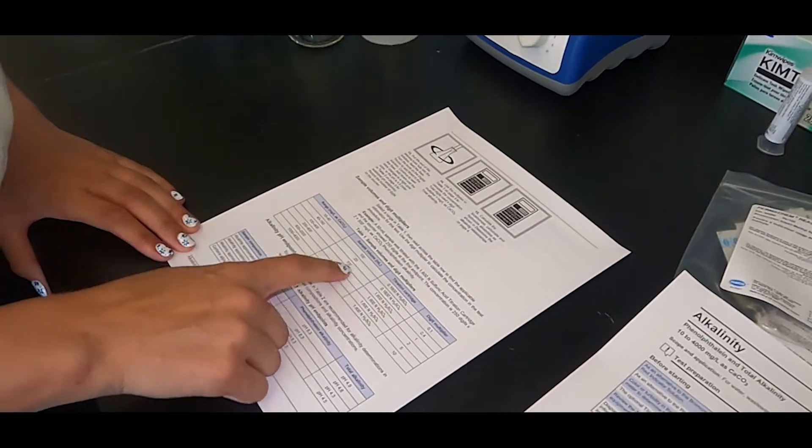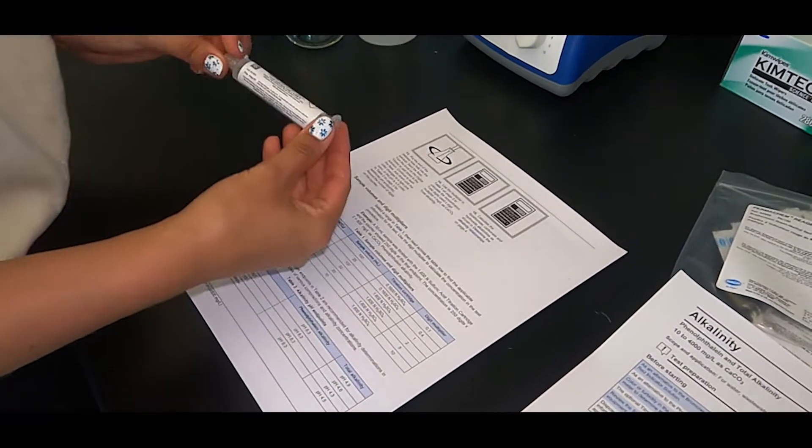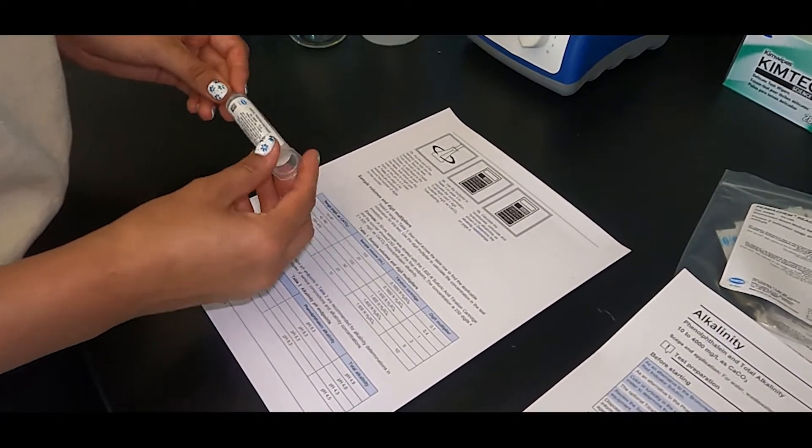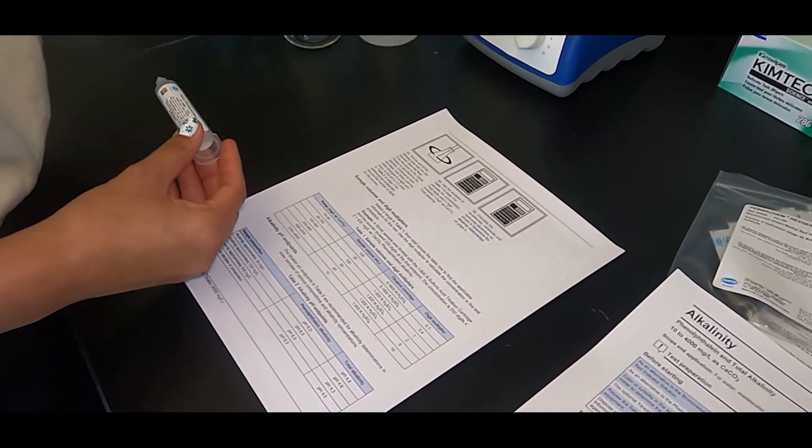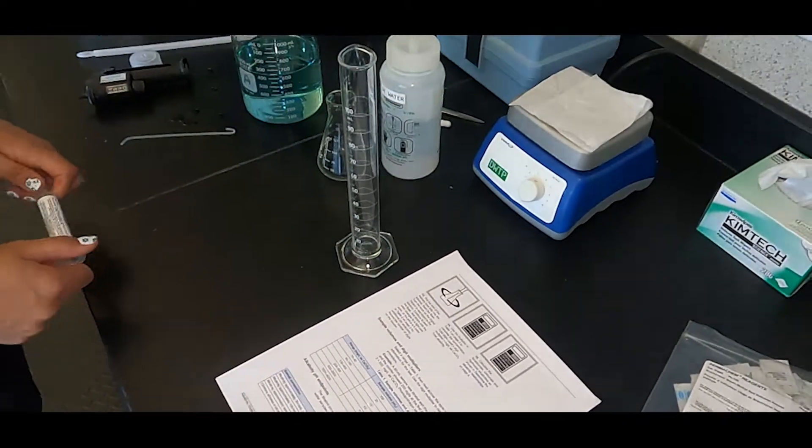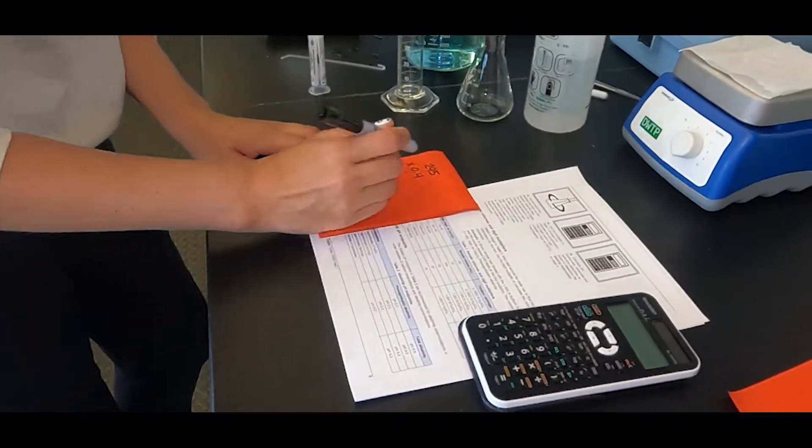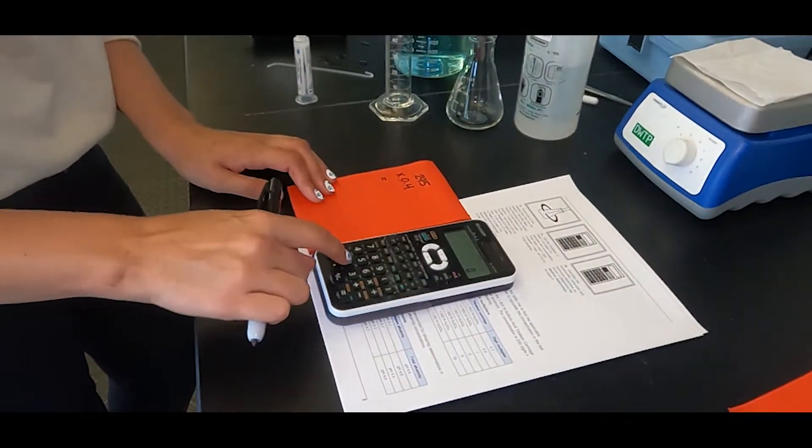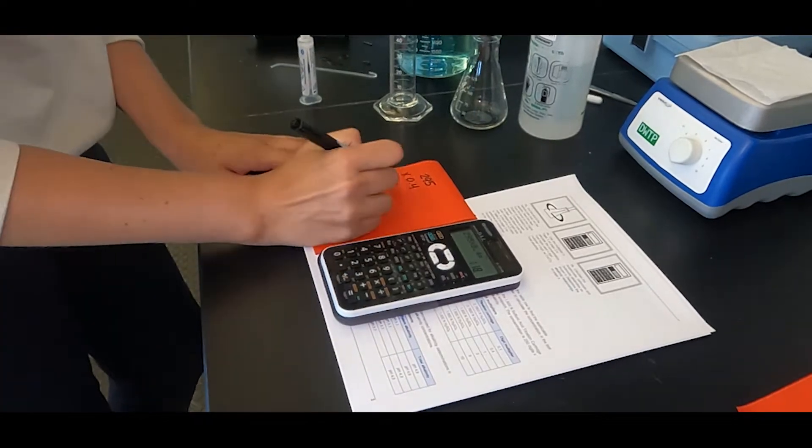Select a sample volume and titration cartridge from the table provided in the method. You may need to adjust and repeat the test as necessary. The digit multiplier will be what you multiply your titrator result by to obtain the true concentration.